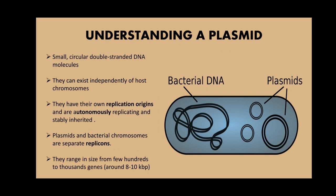Now let's come to the basic understanding of a plasmid. Plasmids are small double-stranded DNA molecules, usually circular, that can exist independently of host chromosomes and are present in many bacteria. They are also present in some yeasts and other fungi. They have their own replication origins, ORI regions, and are autonomously replicating and stably inherited, meaning they don't require any other entity for their replication.